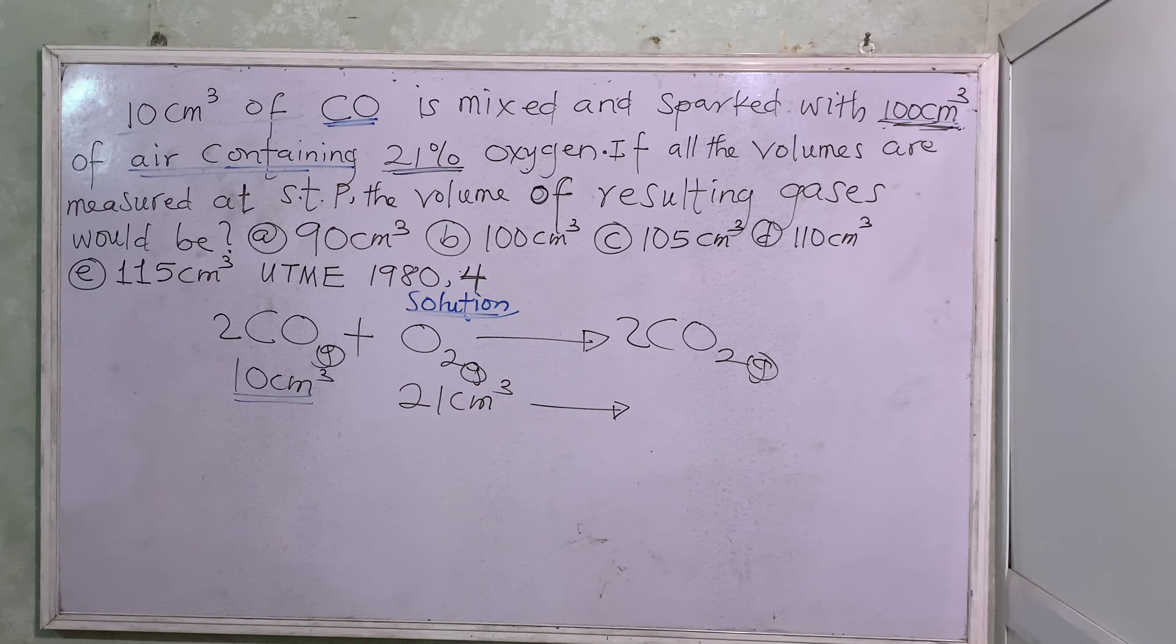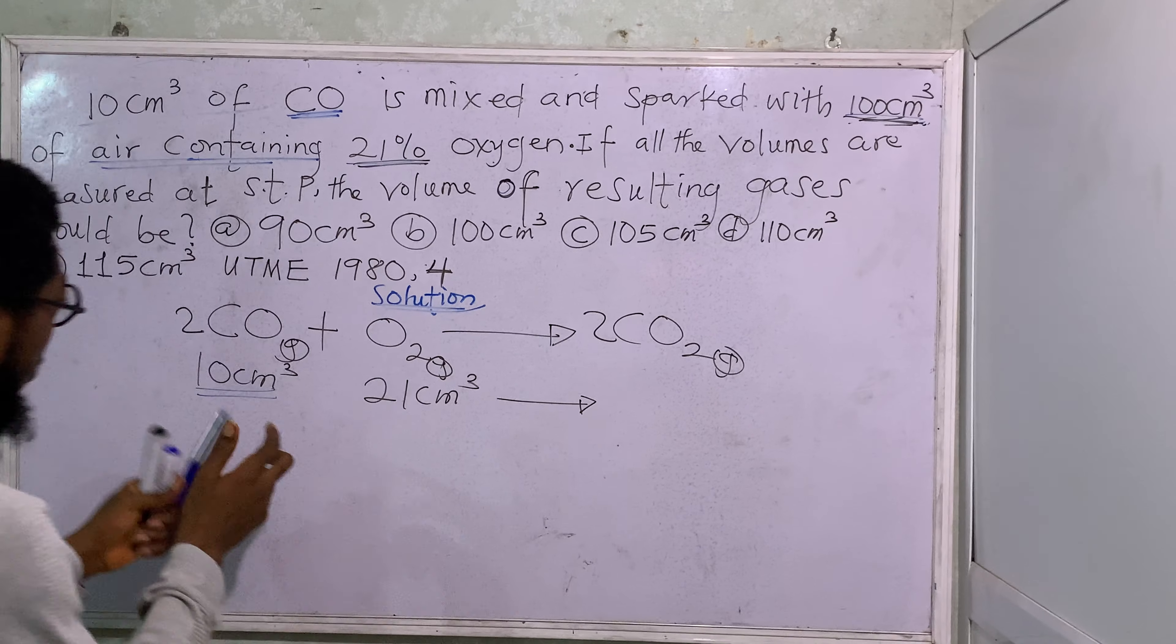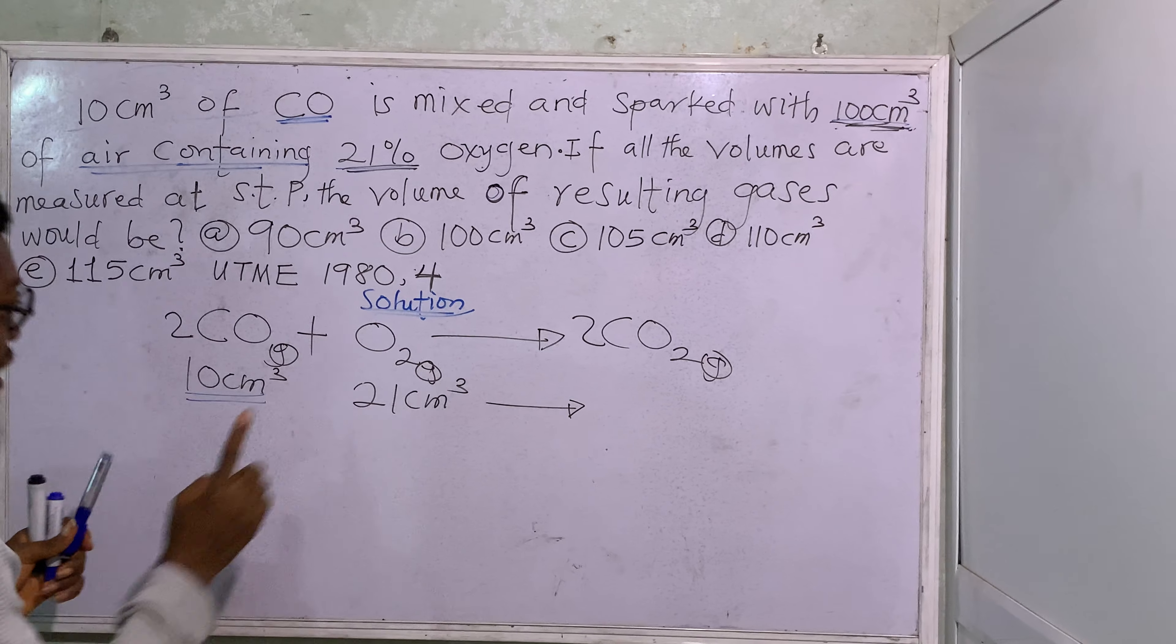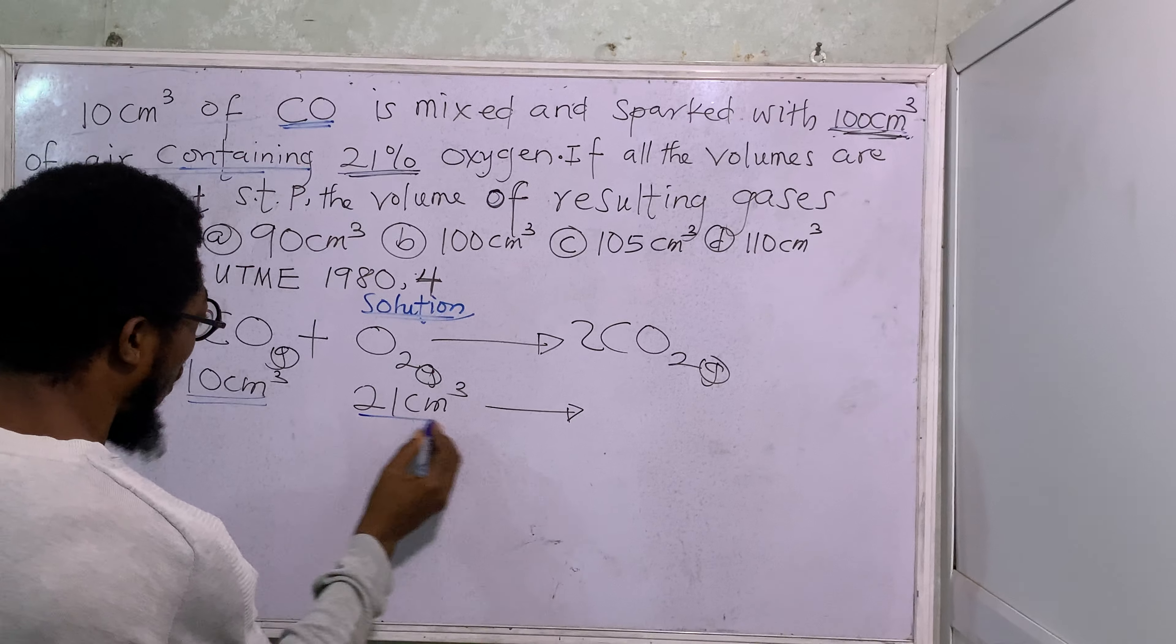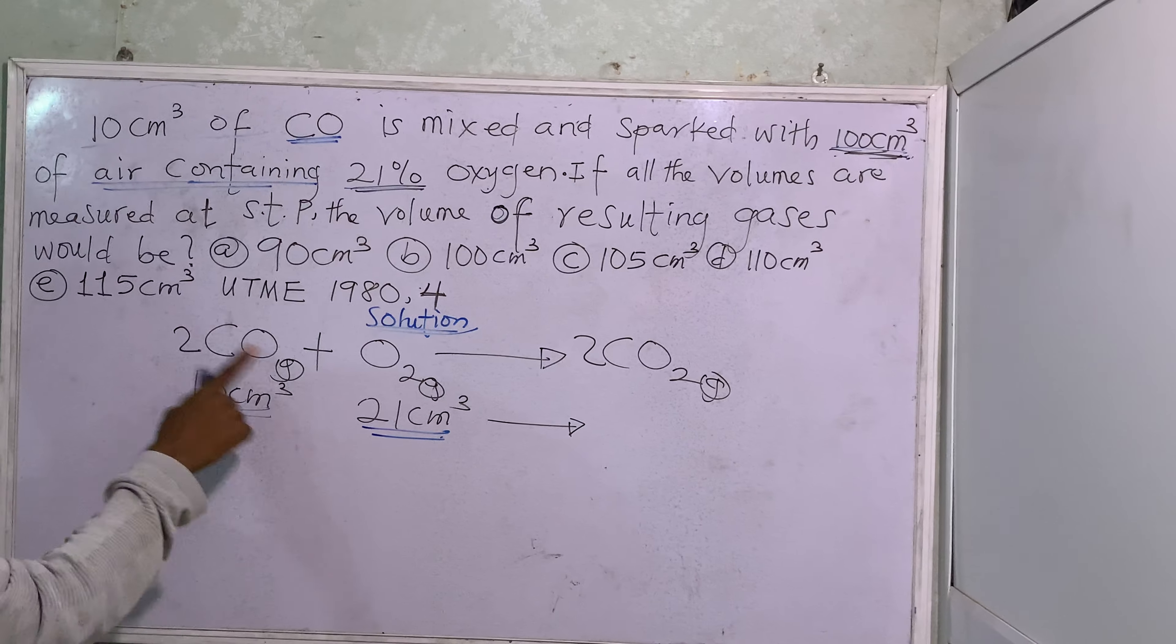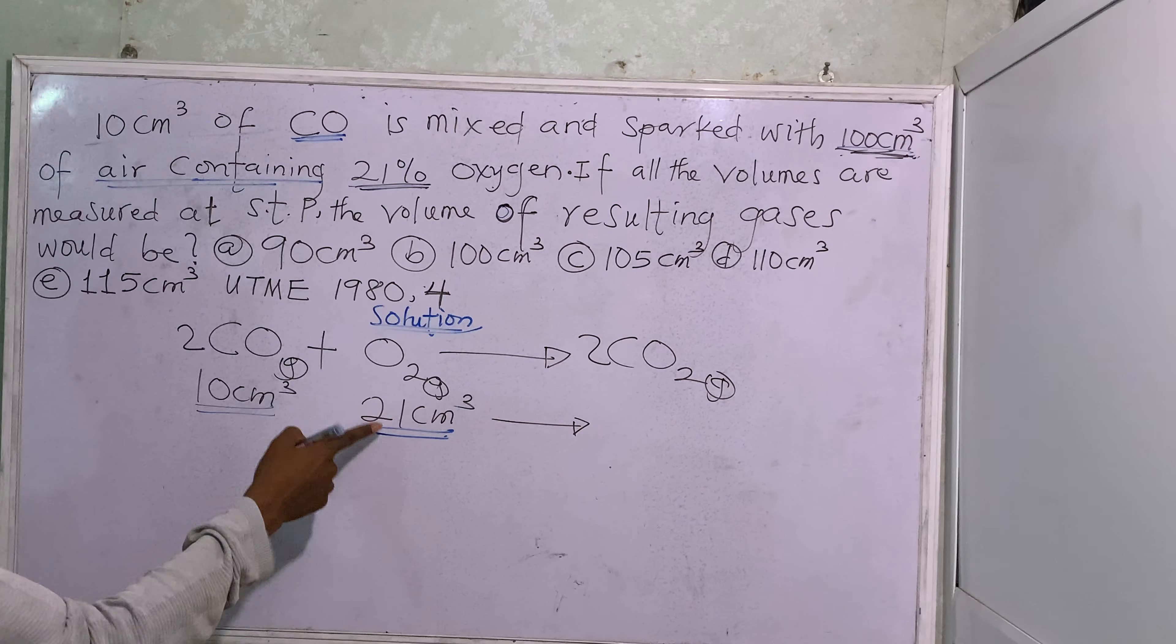We have 10 cm³ of CO. Then, how many oxygen do we need to react with? 2 to 1. If we have 10 here, it must be 5 here. But what about if I think of reacting 21 cm³? How many will I need here? 10.5. But I don't have up to 10.5 here. So it is not possible to react this 21.